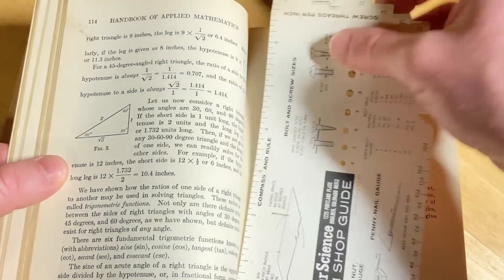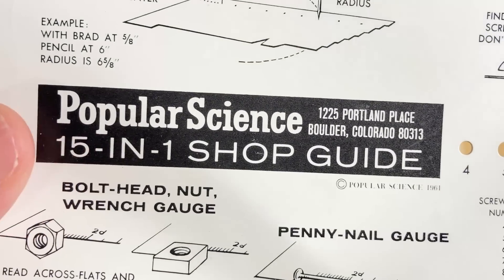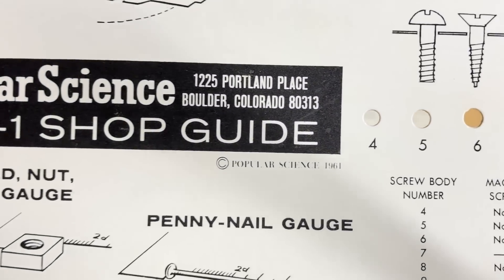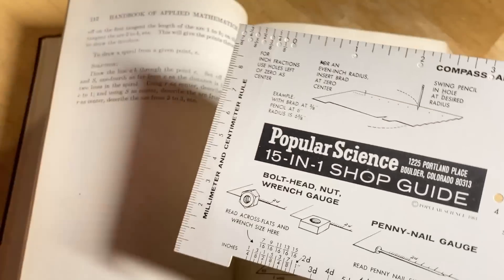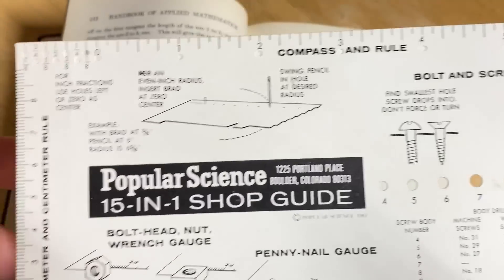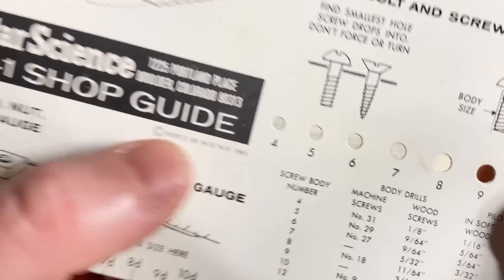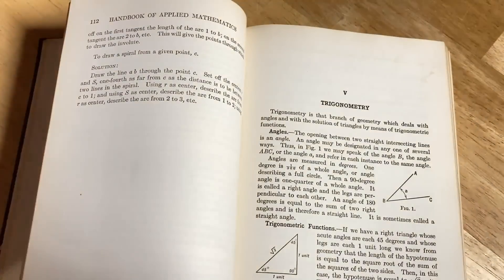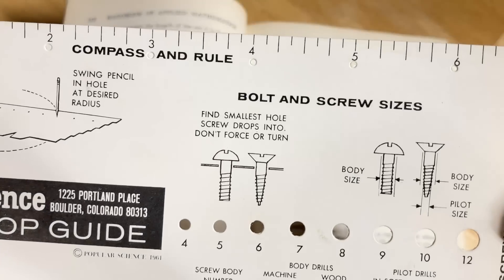Let's skip ahead a little bit. What's this? Here's a hidden treasure. Popular Science, 1225 Portland Place, Boulder, Colorado, 15-in-1 Shop Guide. 1961. So, apparently, someone else used this book in the 60s. Maybe it was the same owner, but they put this in the book. So, someone, after or in 1961, put this in here. Let's have to smell it. I just feel like everything needs to be smelled. Pieces of history.